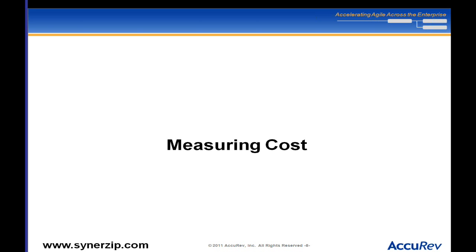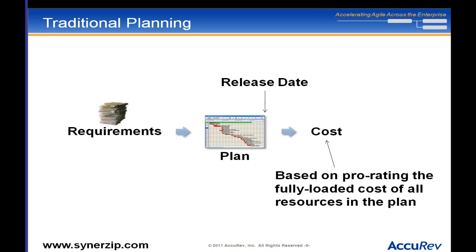Traditionally, you've got your requirements — your scope — you come up with a plan, you have a release date, and from that you get your cost on a per-person basis: how much are they fully loaded, this resource costs more than that, etc. You multiply against your plan to get your cost. Maybe some are part-time, some full-time. That's fairly laborious — a lot of accounting and spreadsheets — but we know how to do it. So how do we do that in agile?